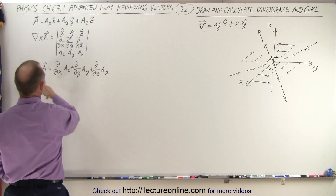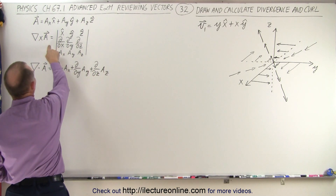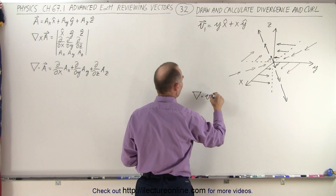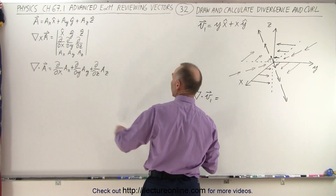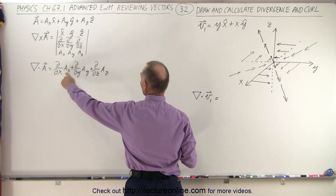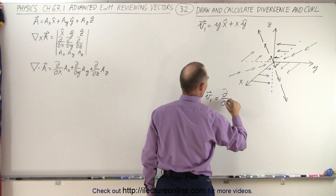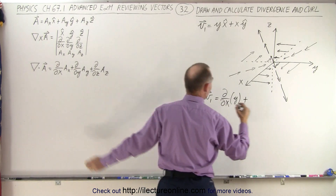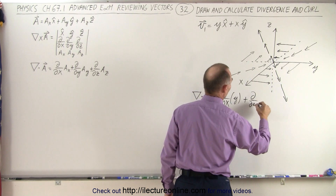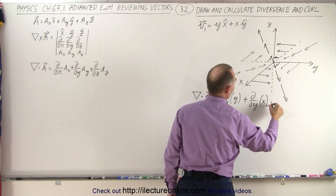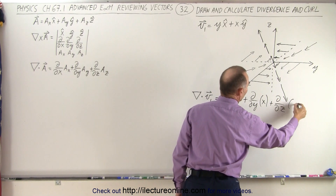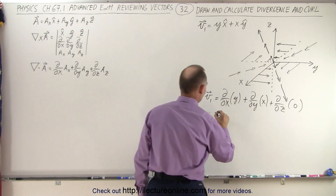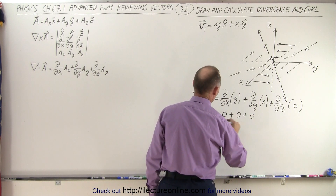Here we have the general definitions of finding the divergence and finding the curl. Let's find the divergence first. We'll take the del operator and multiply times the vector field via the dot product, which is equal to the partial with respect to x of the x-component — the partial of y with respect to x — plus the partial with respect to y of the y-component — the partial of x with respect to y — plus the partial with respect to z of the z-component, which is zero. So this is equal to zero plus zero plus zero, which is zero.